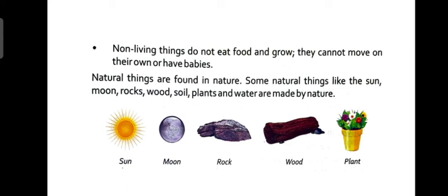Natural things are found in nature. Some natural things like the sun, moon, rocks, wood, soil, plants and water are made by nature. A student asks: what are natural things? Ma'am explains: these are things that already exist in nature and were not made by humans. These things already exist in nature — that is why we call them natural things. Examples: sun, moon, rocks, wood, soil, water — all made by nature.